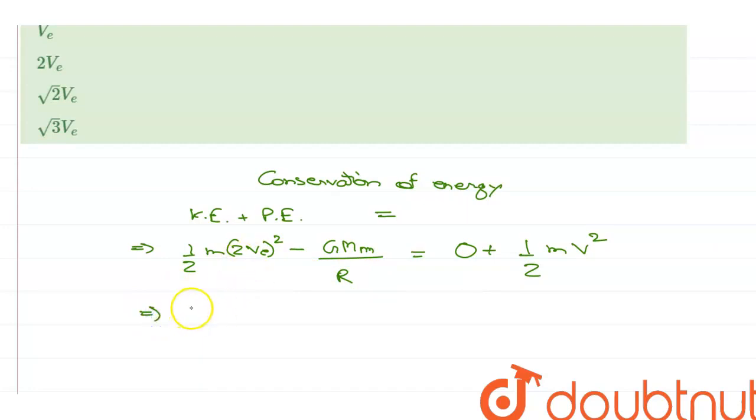So this gives us 4 by 2 m V squared minus GMm by R is equal to 1 by 2 m V squared.